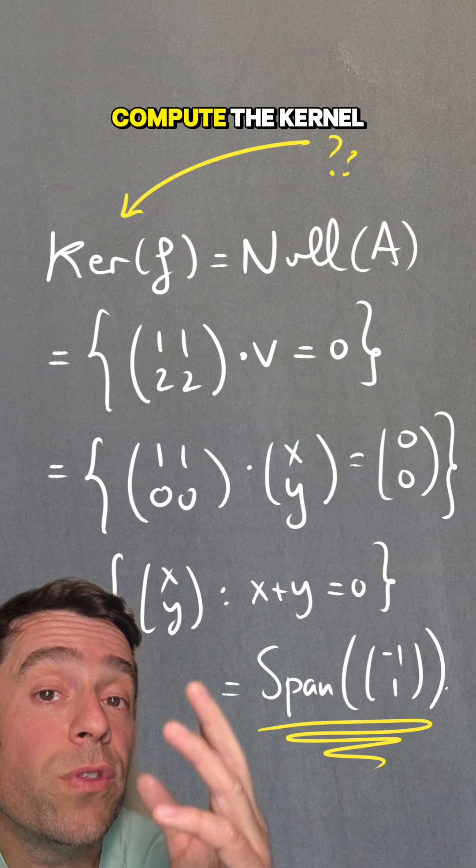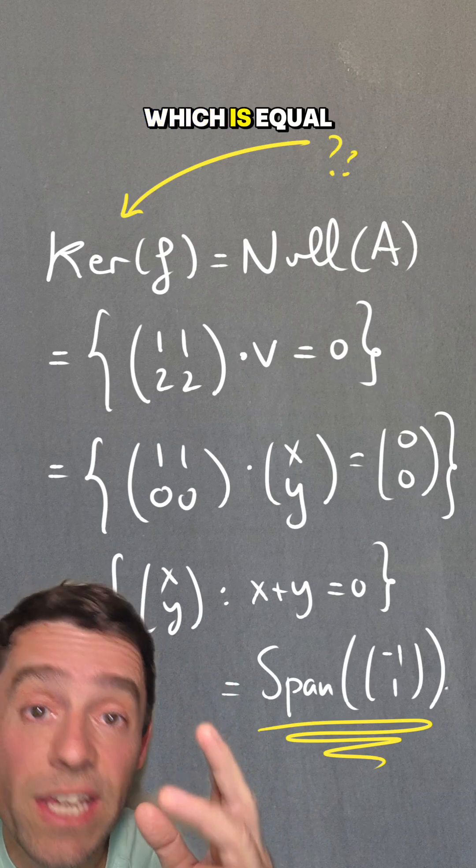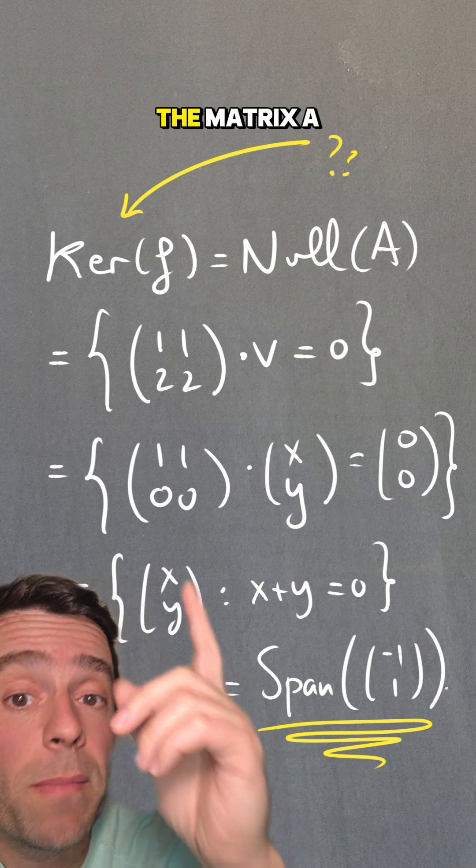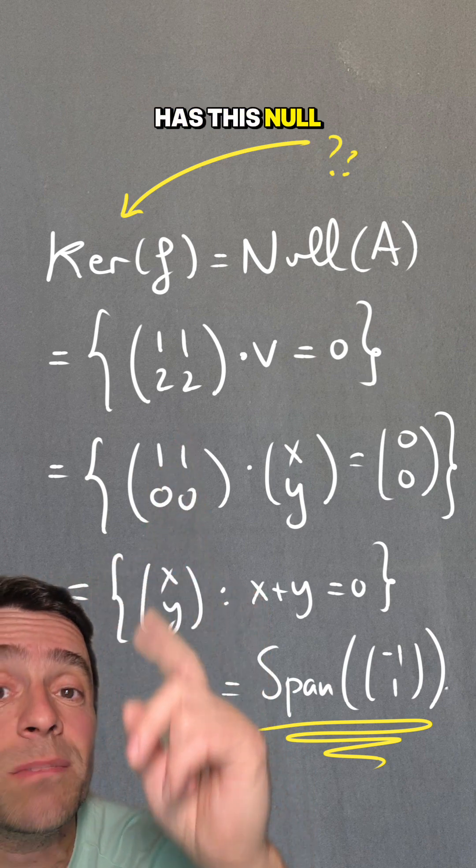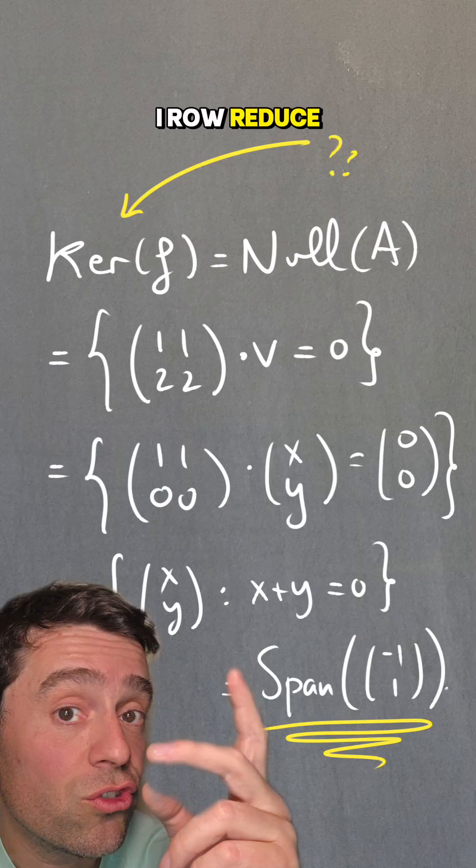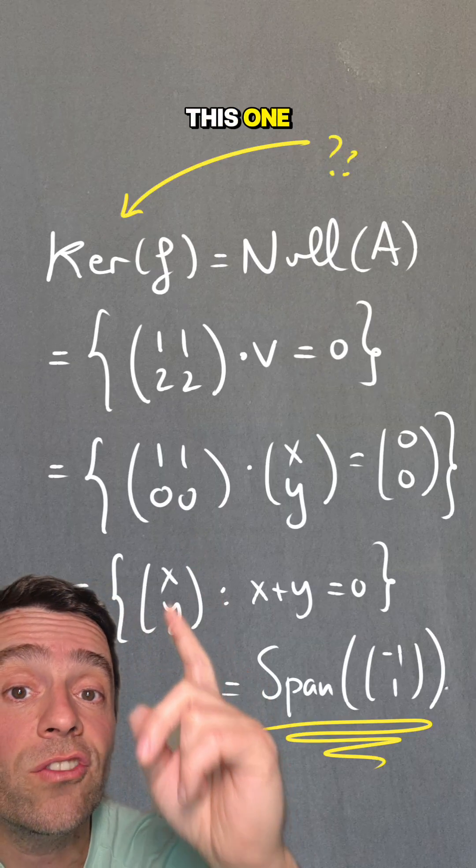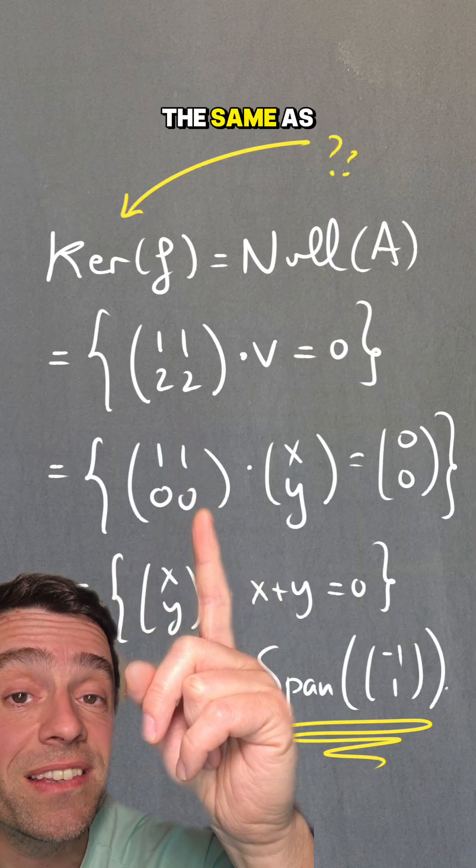Finally, I want to compute the kernel of f, which is equal to the null space of the matrix A. The matrix A has this null space by definition. I row reduce the matrix and I get to this one. So that null space will be the same as this null space.